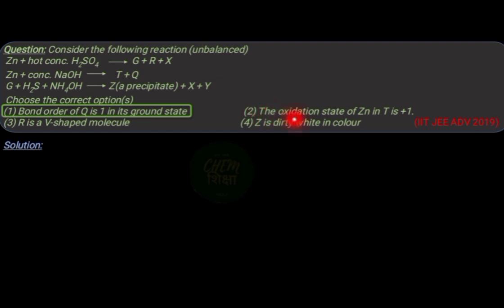Now consider option 2, in which we have to find out the oxidation state of zinc in molecule T, that is sodium zincate. To find out the oxidation state of zinc in the molecule, let us assume its oxidation state to be X, then solve